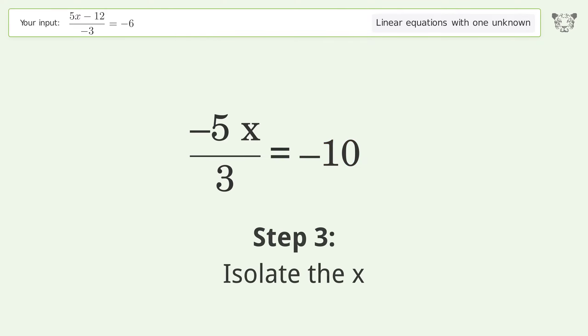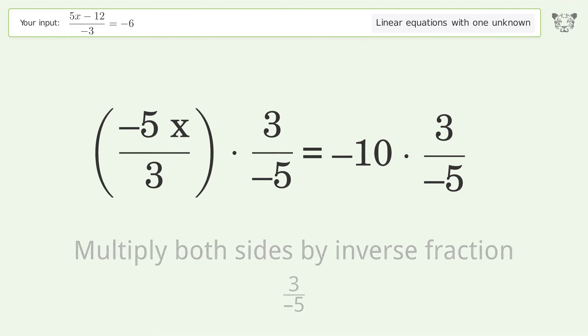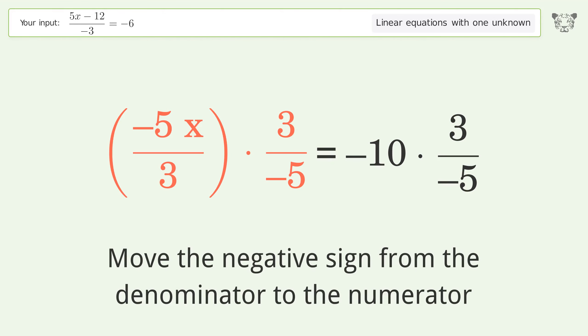Isolate the x. Multiply both sides by the inverse fraction 3 over negative 5. Move the negative sign from the denominator to the numerator.